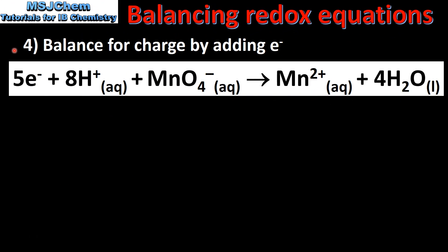In step 4 we balance for charge by adding electrons. On the left hand side of the equation we have 8 positive hydrogen ions and 1 negative MnO₄⁻ ion. On the right hand side we have a manganese ion with a 2+ charge. So to balance for charge we add 5 electrons to the left hand side, giving us an overall 2+ charge on the left hand side and a 2+ charge on the right hand side.